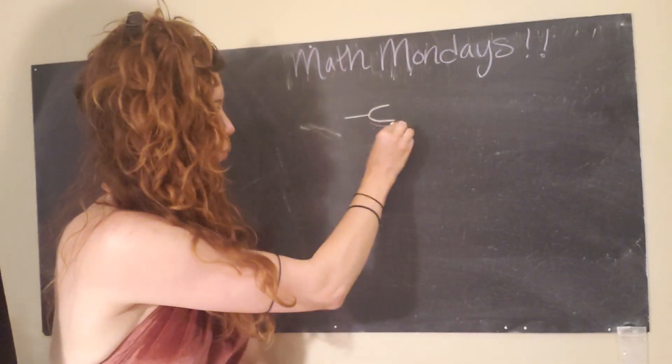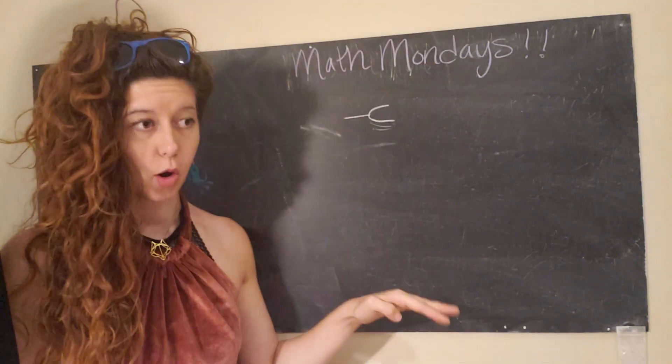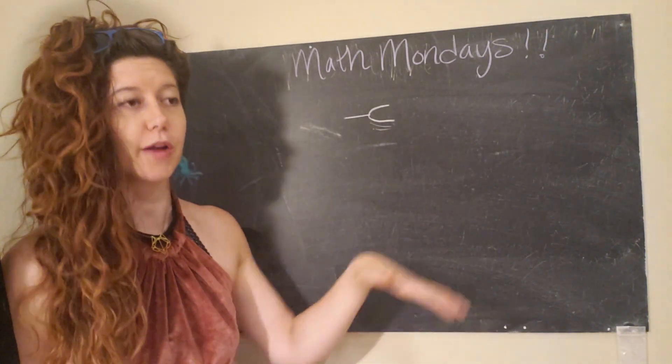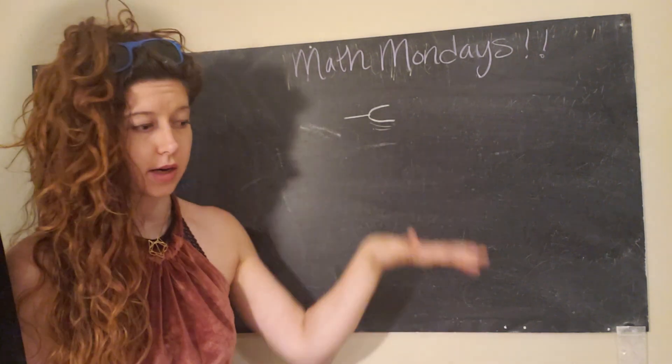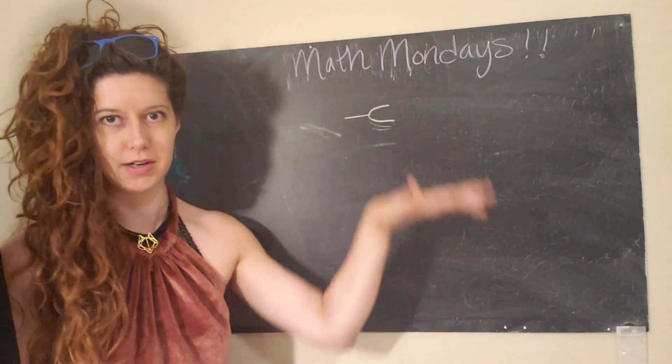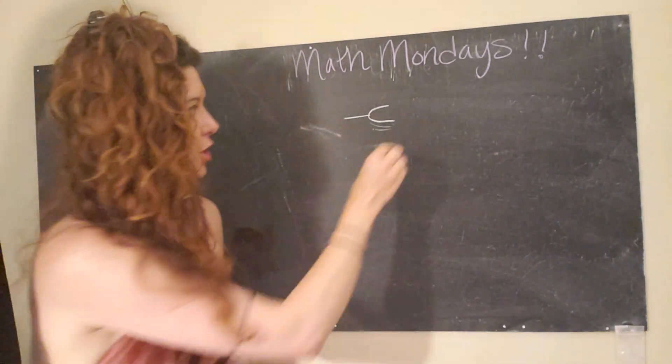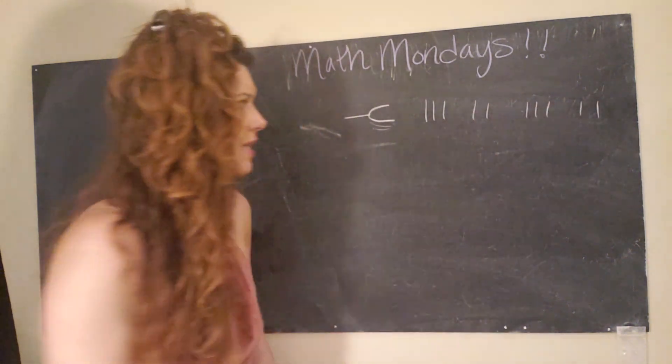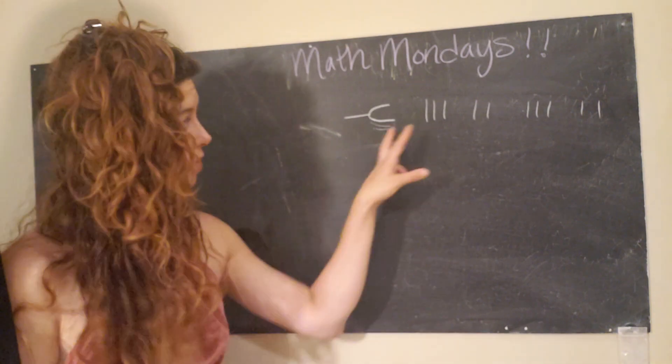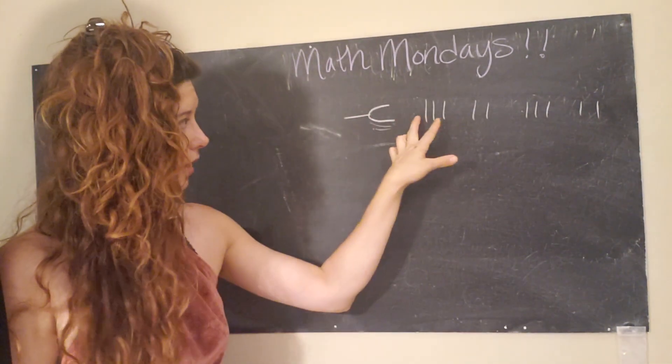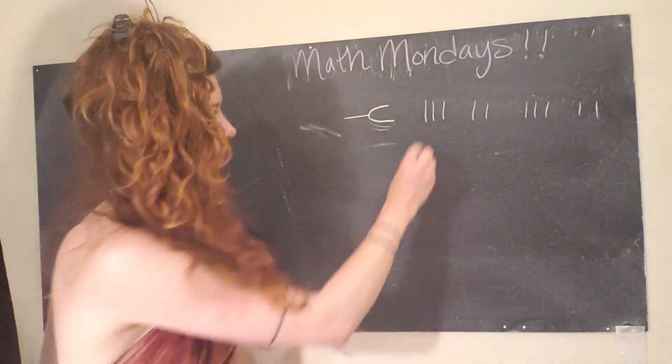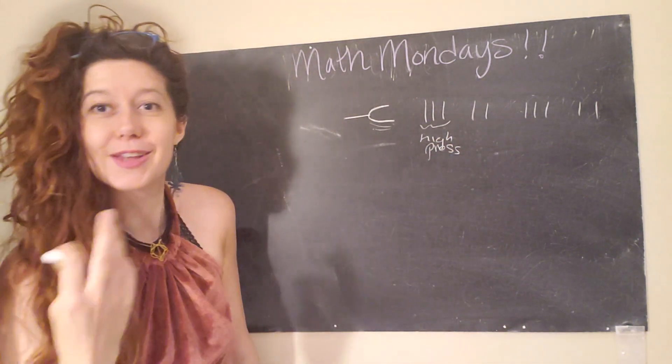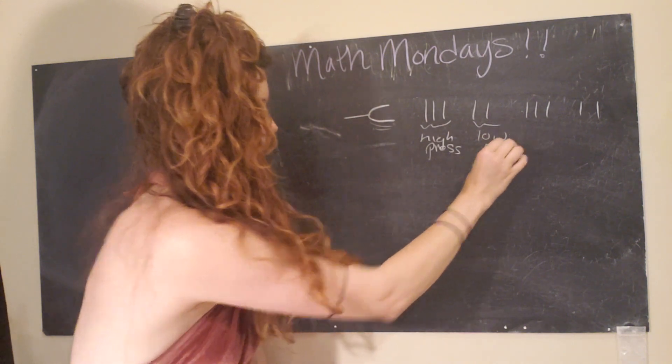As the sides of the tuning fork move back and forth, they push against air molecules. When this side moves, it pushes the air molecules and squishes them together. When it moves back, it creates a little bit less pressure. So it's squishing, not squishing, squishing, not squishing. The resulting air pressure wave, you could represent with these lines representing groups of air molecules. This is a region of high pressure and this is a region of low pressure.